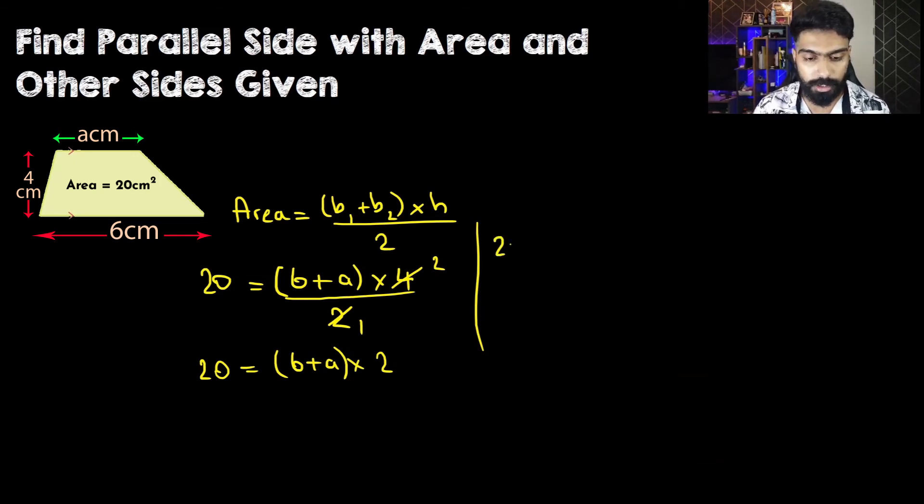So we have 20 divided by 2 equals 6 plus a. Now 20 divided by 2 is going to give us 10, so we have 10 equals 6 plus a.